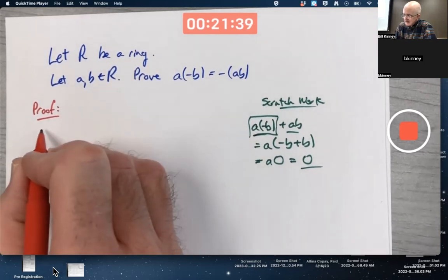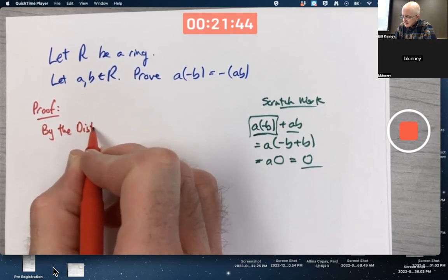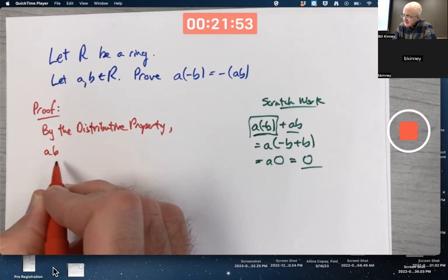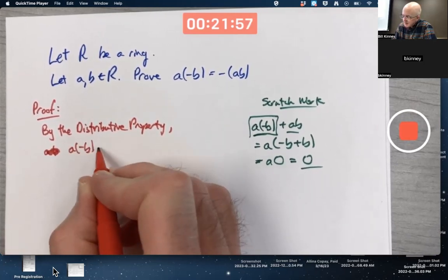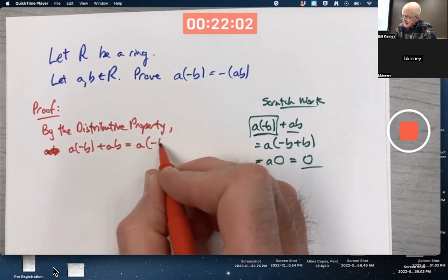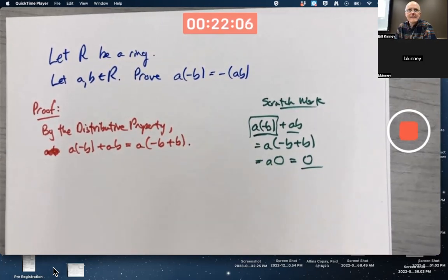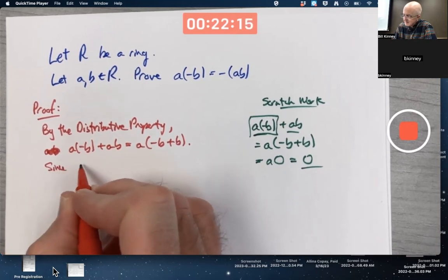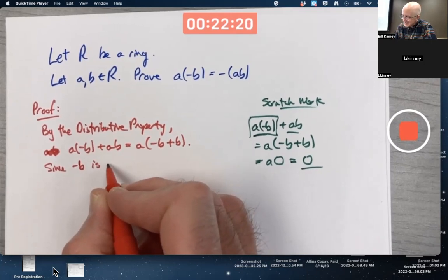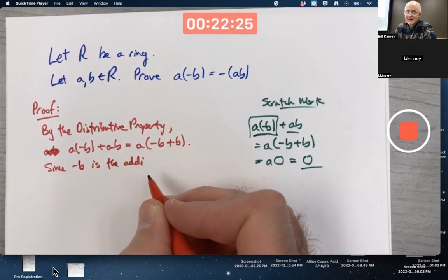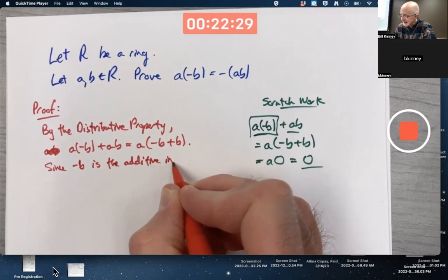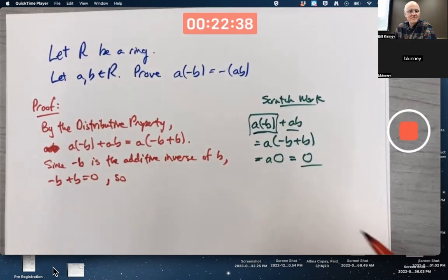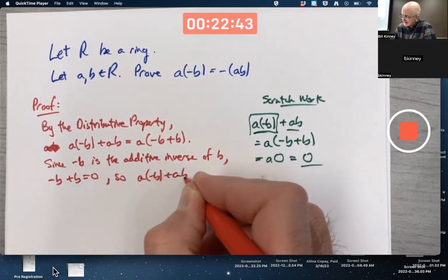You could say, by the distributive property, AB, or sorry, A times the additive inverse of B plus AB is A times, in parentheses, the additive inverse of B plus B. I'm going to separate this into a couple sentences. Since the additive inverse of B, well okay, I'll say it in words, maybe I should say negative B is the additive inverse of B. The additive inverse of B plus B is zero, so this is A times zero.